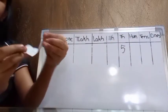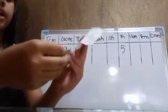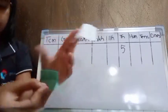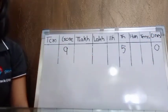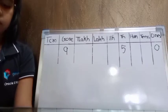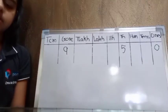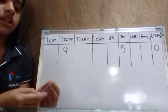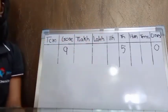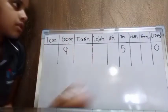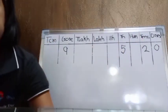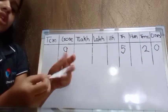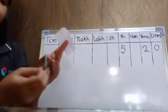Now it is 1s. In the 1s place we have to write number 0. The chits we open, we have to keep them aside pairwise. Next is 10s place. In the 10s place we have to write number 2.